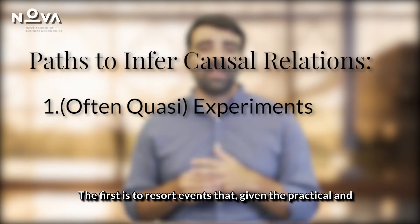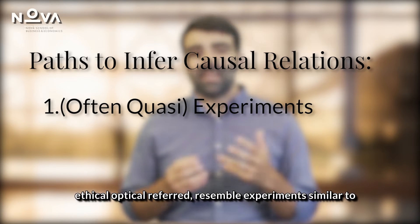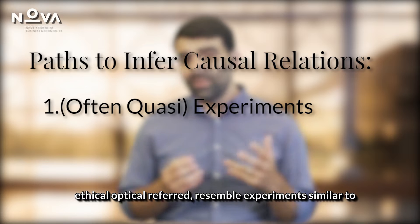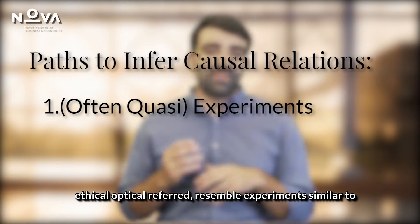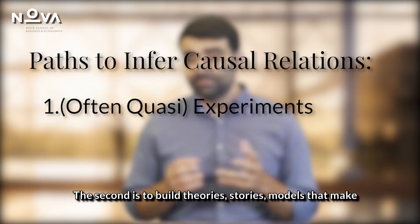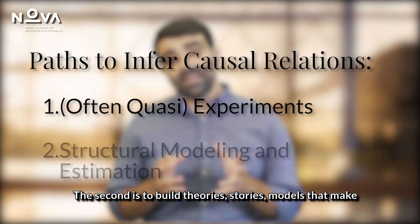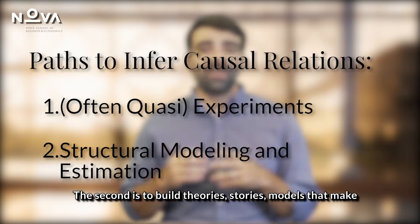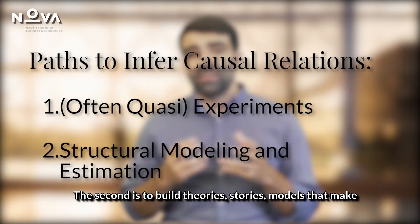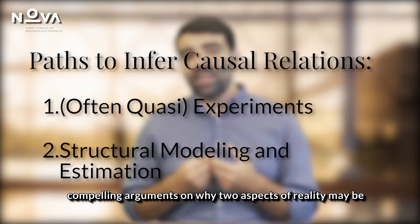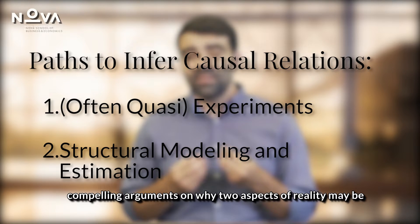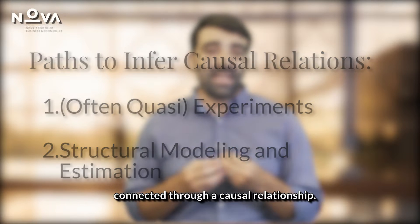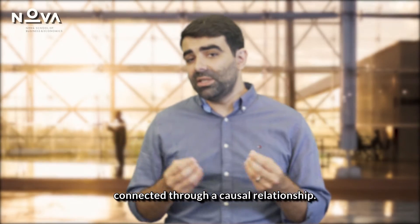The first is to resort to events that, given the practical and ethical obstacles referred, resemble experiments similar to the ones performed in a lab. The second is to build theories, stories, models that make compelling arguments on why two aspects of reality may be connected through a causal relationship.